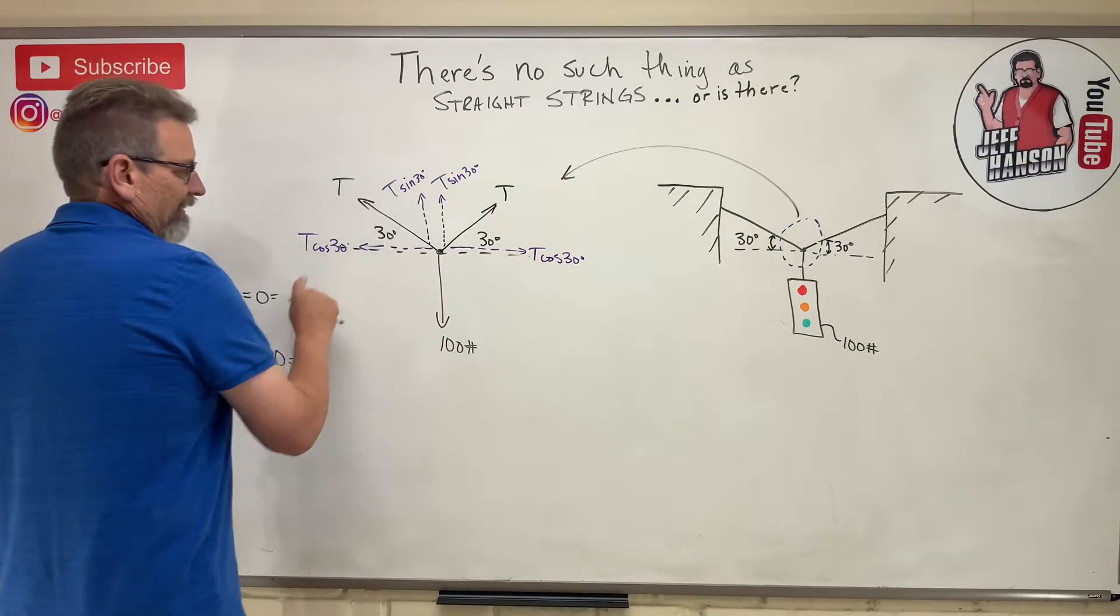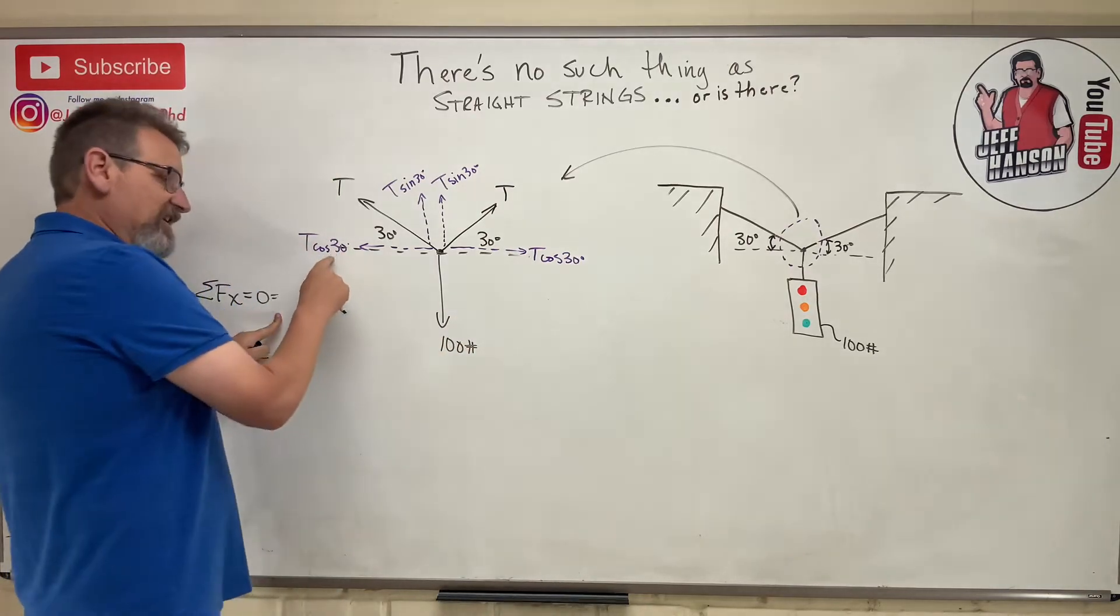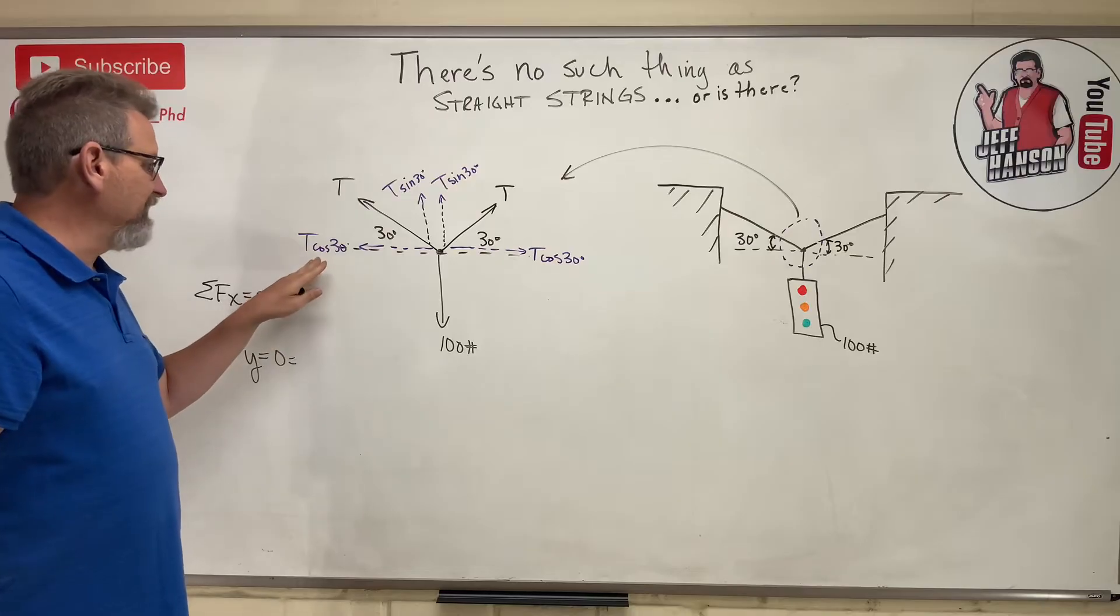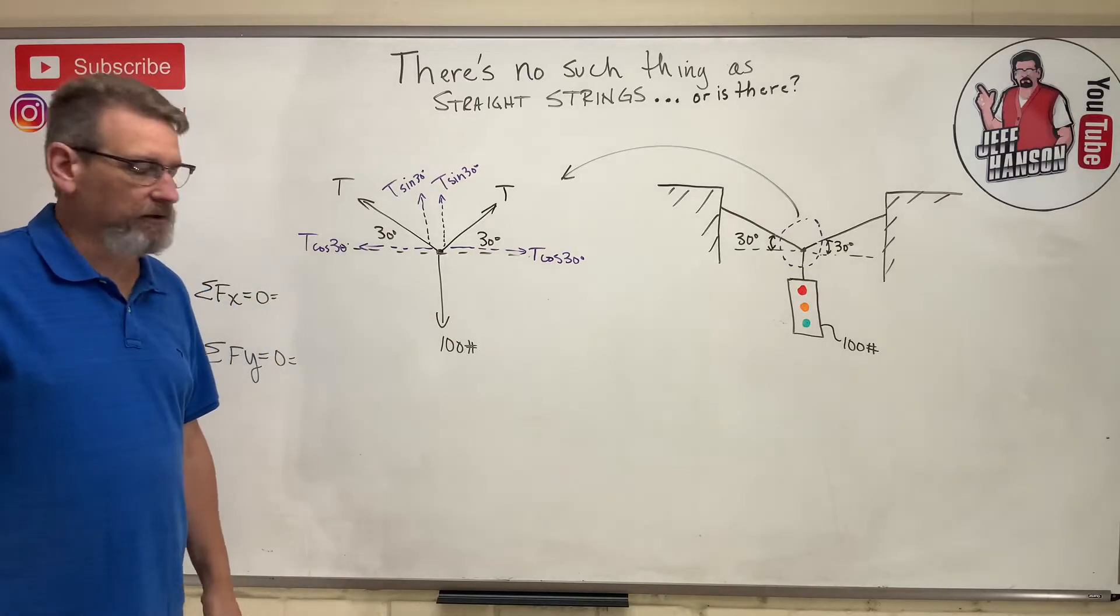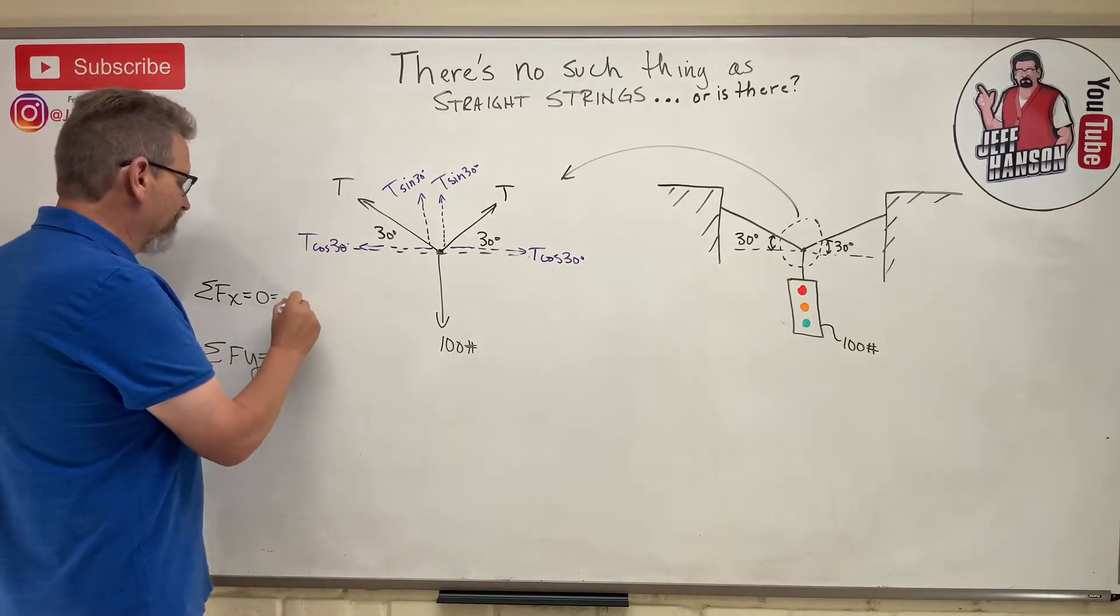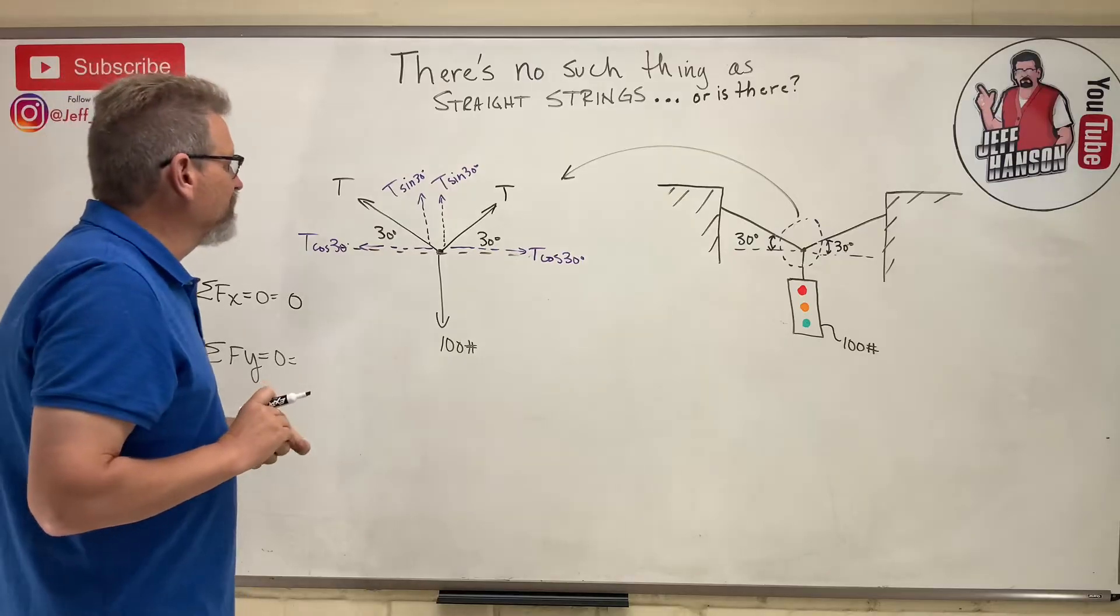Let's look at the force in the x. In the x direction I have T cos 30 minus T cos 30. Wait a minute, so I've just proved that T cos 30 equals T cos 30. I'm really not going to get any information whatsoever from the x equation.